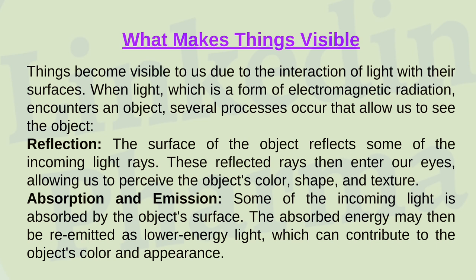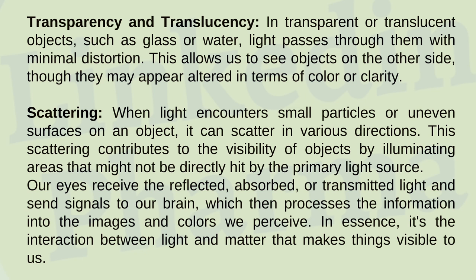Absorption and Emission: some of the incoming light is absorbed by the object's surface. The absorbed energy may then be re-emitted as lower energy light, contributing to the object's color and appearance. In transparent or translucent objects, such as glass or water, light passes through with minimal distortion, allowing us to see objects on the other side. Scattering: when light encounters small particles or uneven surfaces, it scatters in various directions, illuminating areas not directly hit by the primary light source. Our eyes receive the reflected, absorbed, or transmitted light and send signals to our brain, which processes the information into images and colors we perceive.